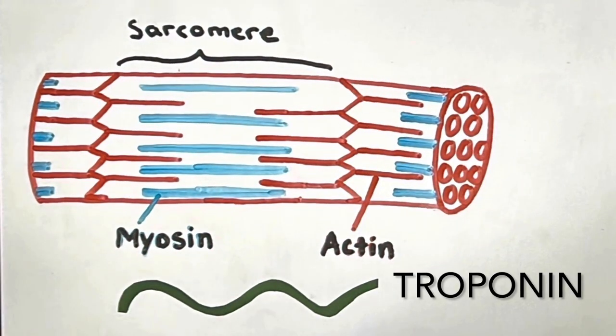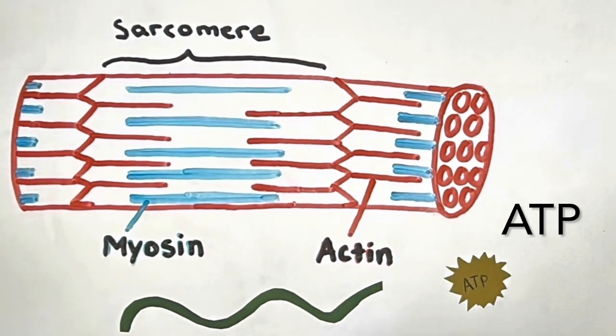Troponin is a tricky protein that prevents actin and myosin from binding. ATP is the energy we will be using for this muscle contraction.